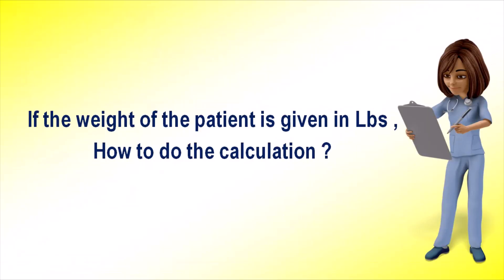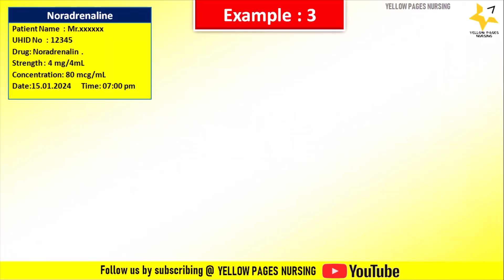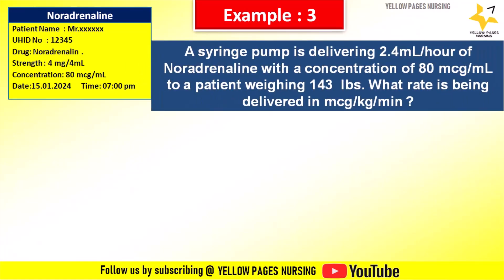Now, if the patient's weight is given in lbs, how do we do the calculation? Example 3: A syringe pump is delivering 2.4 ml per hour of noradrenaline with a concentration of 80 mcg per ml to a patient weighing 143 lbs. What rate is being delivered in mcg per kg per minute?